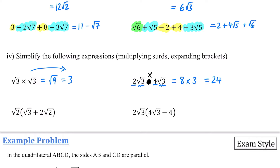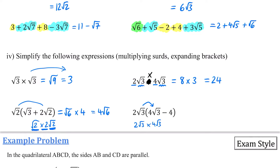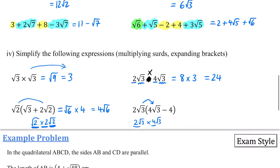You can also expand brackets: 2(√2 × √3) gives 2√6. Then (√2)(2√2) = 2 × (√2 × √2) = 2 × 2 = 4, so that term becomes 4√6. Expanding (2√3)(4√3 − 4): 2√3 × 4√3 = 2 × 4 × 3 = 24, and 2√3 × (−4) = −8√3. So the result is 24 − 8√3.